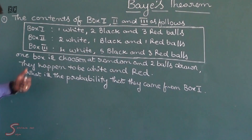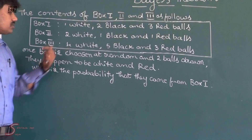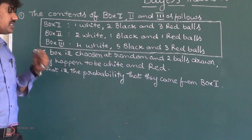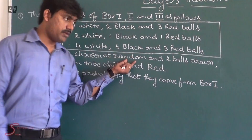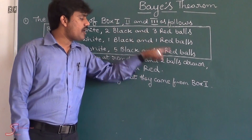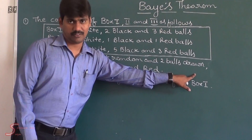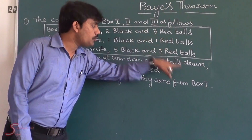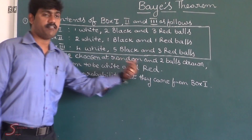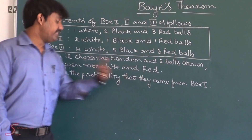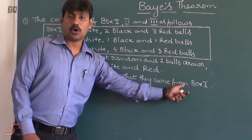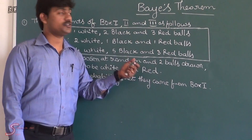The question is: one box is chosen at random. Out of 3 boxes we have to select 1 box — that is the first step. After that, from that box we have to draw 2 balls. From those 2 balls it happens to be white and red. Then what is the probability that they came from box 1?